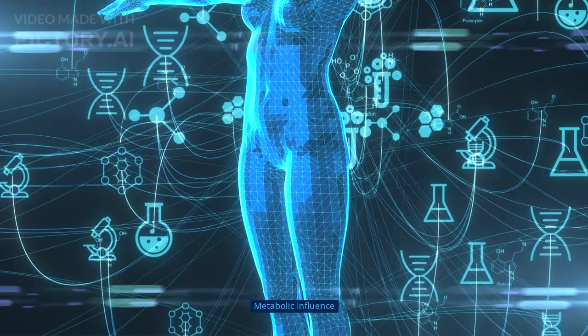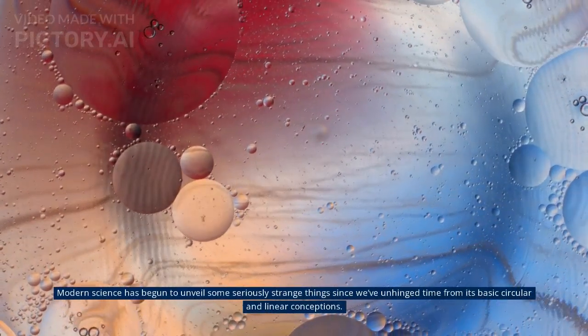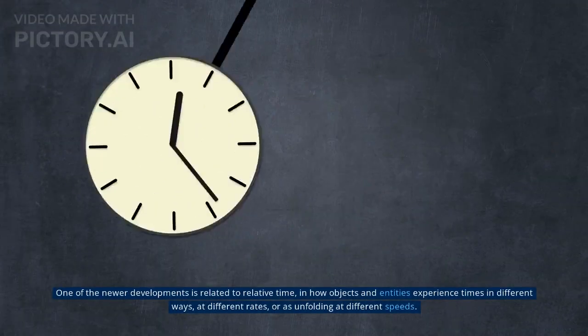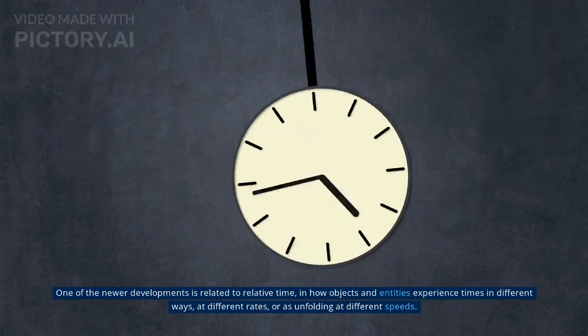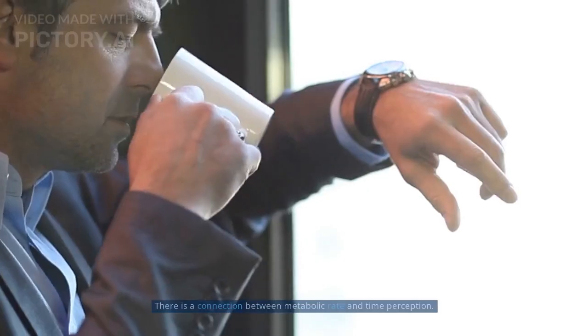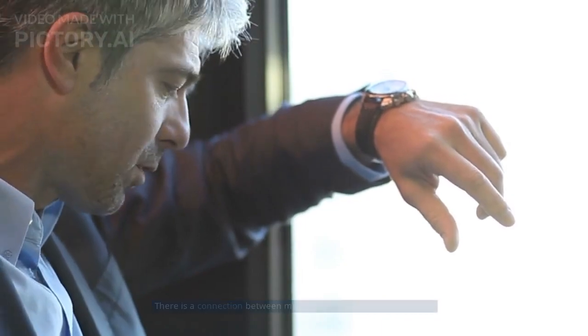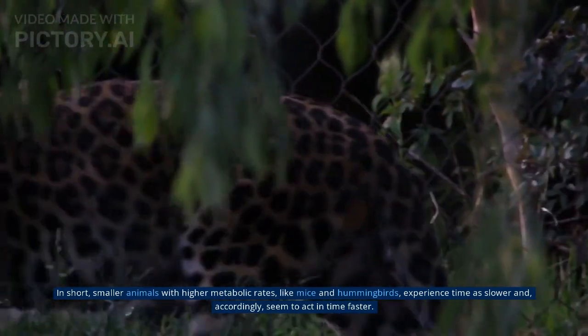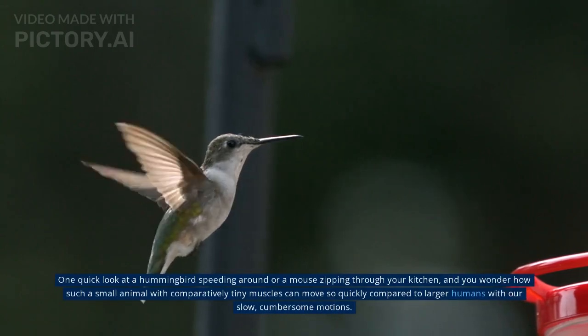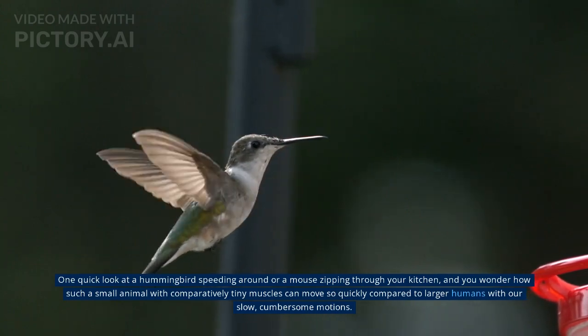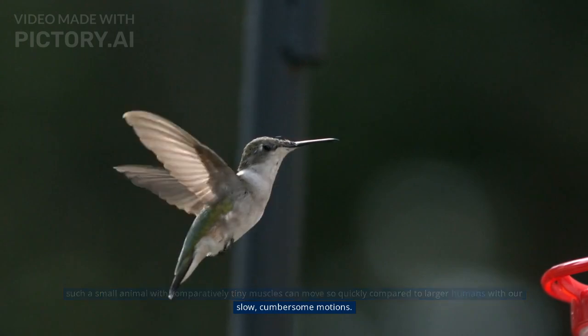Number 9: Metabolic Influence. Modern science has begun to unveil some seriously strange things since we've unhinged time from its basic circular and linear conceptions. One of the newer developments is related to relative time in how objects and entities experience times in different ways, at different rates, or as unfolding at different speeds. There is a connection between metabolic rate and time perception. In short, smaller animals with higher metabolic rates, like mice and hummingbirds, experience time as slower and accordingly, seem to act in time faster. One quick look at a hummingbird speeding around or a mouse zipping through your kitchen, and you wonder how such a small animal with comparatively tiny muscles can move so quickly compared to larger humans with our slow, cumbersome motions.